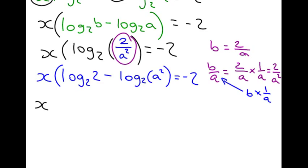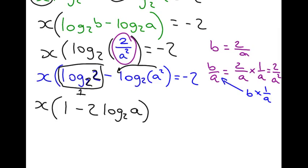Now, when we think about log to base 2 of 2, what power do you have to raise 2 by to get 2? The answer is 1. And all we're going to do in the second term is 2 log to base 2 of A by bringing this power to the front. So, that equals minus 2. We're a couple of steps away now. We divide by this value, and we get minus 2 over 1 minus 2 log to base 2 of A.